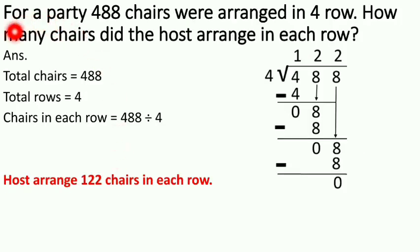Next, for a party 488 chairs were arranged in 4 rows. How many chairs did the host arrange in each row? Total chairs is 488. Total rows is equal to 4. And chairs in each row is equal to 488 divided by 4. So what do you have to do? First draw a bracket.